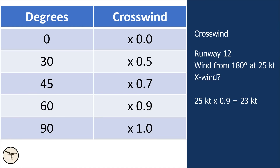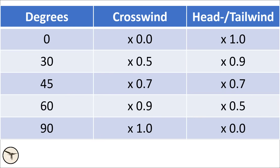For the headwind or tailwind component, just reverse the logic. At 0 degrees angle, you get 100% headwind or tailwind. At 60 degrees off, only 50% of the wind contributes as a headwind or tailwind component.